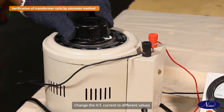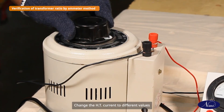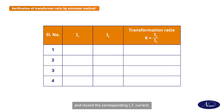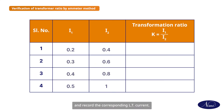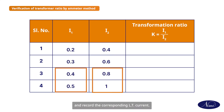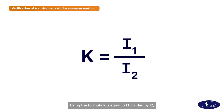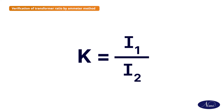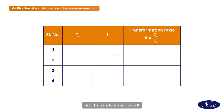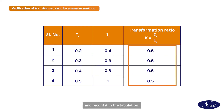Change the HT current to different values and record the corresponding LT current. Using the formula K is equal to I1 divided by I2, find the transformation ratio K and record it in the tabulation.